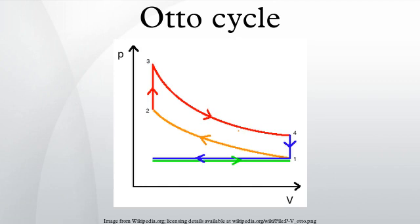The mass of gas that is subjected to those changes is called the system. In this case, the system is defined to be the fluid within the cylinder. By describing the changes that take place within the system, it will also describe an inverse — the system's effect on the environment.